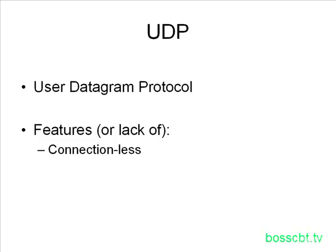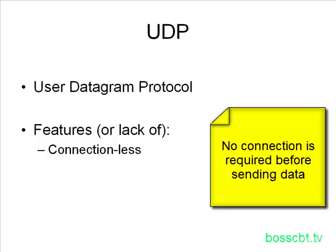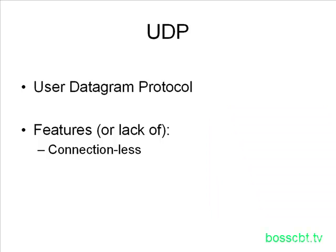UDP is a connectionless protocol, whereas TCP is connection-oriented. A connectionless protocol means it does not have to establish a connection before it can start sending data — it will just start sending. TCP, by contrast, is polite: it sets up that connection first, negotiates it, and when both sides are happy, it sends data. UDP doesn't care about any of those formalities. It just sends the data.